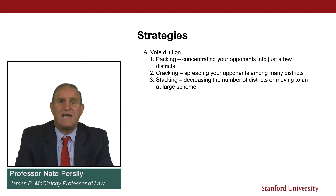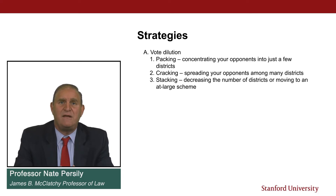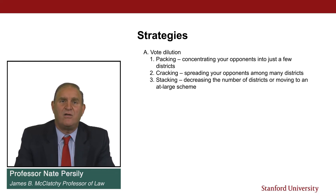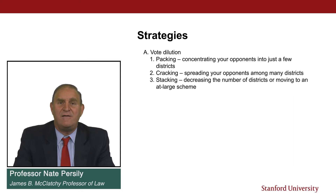Stacking is combining districts into large districts that elect multiple members. For example, if you're in a town with four districts and one is clearly Republican and three are majority Democrat, you could eliminate the districts and have four people elected from the entire city — you might then get four Democratic districts instead of having one reliably Republican one. There's also a strategy called kidnapping, where you draw the districts so as to draw the house of an incumbent from one district into another person's district, pairing up their houses to prevent that incumbent from being able to run from that district.